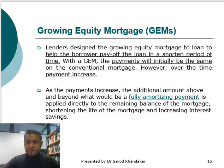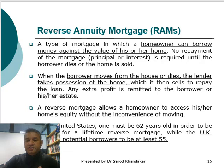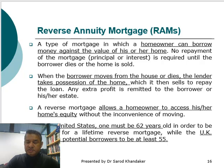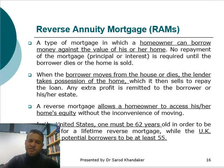Another type is called the reverse annuity mortgage. This mortgage is typically for older people who have reached a certain age — in the US it is 62 years, in the UK it is around 55 years — and who want to get equity out from their own home. This is a very interesting type of mortgage because instead of the owner repaying an amount, they can borrow money or receive cash out from their own home. At the end of the lecture we'll watch a video about the reverse annuity mortgage to give you a clearer idea.